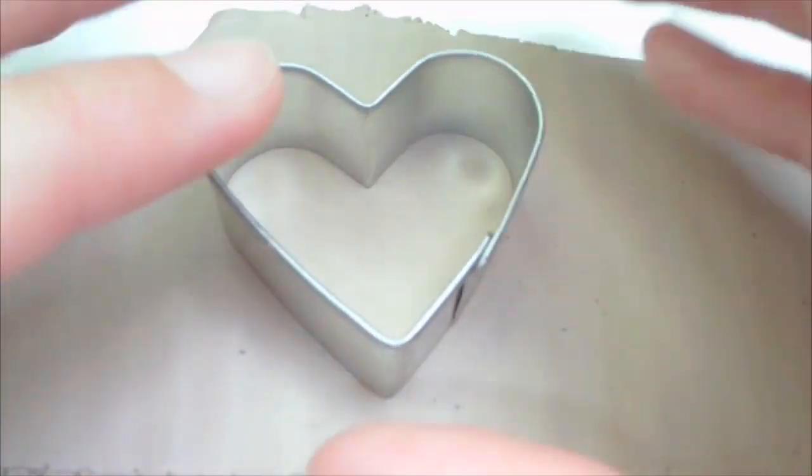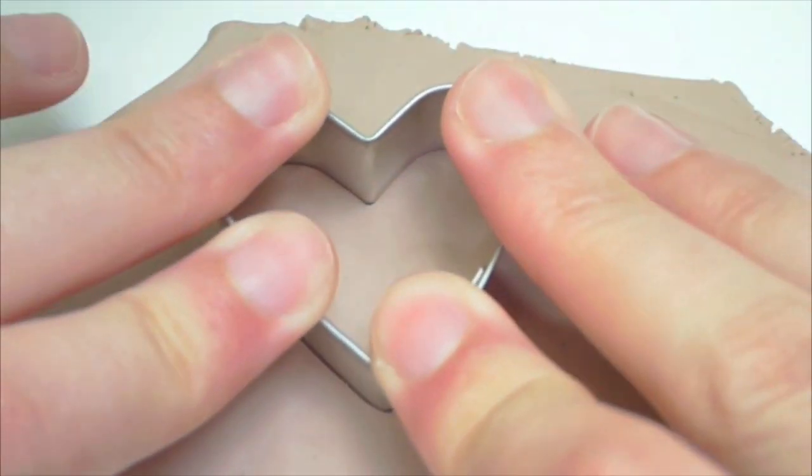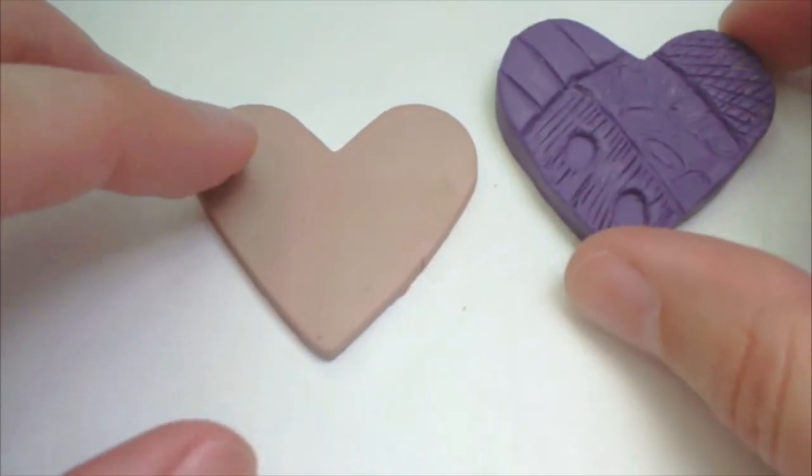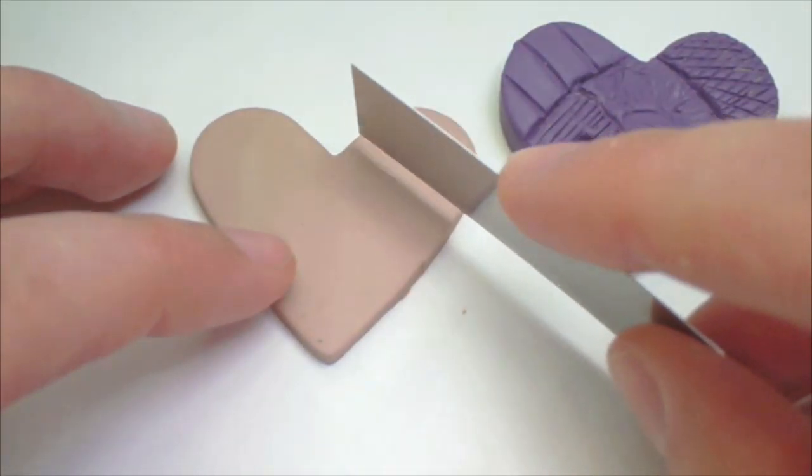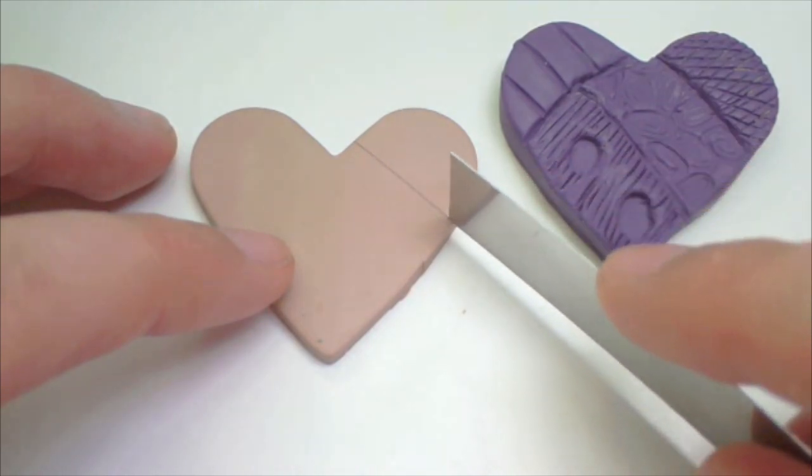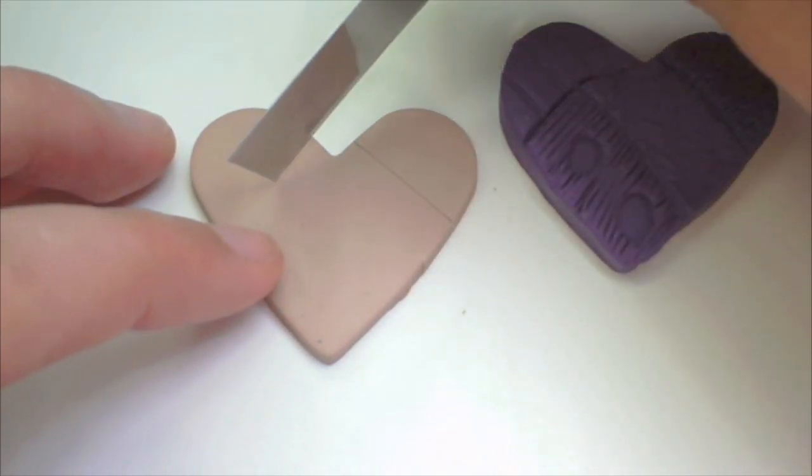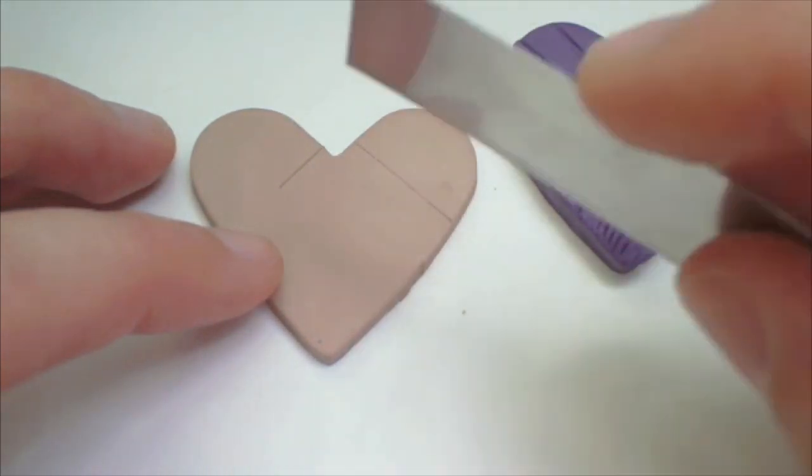Start off by rolling out some scrap clay and cut a heart shape with a cookie cutter. Then measure out what section will have the swirl pattern and how big you want it to be.